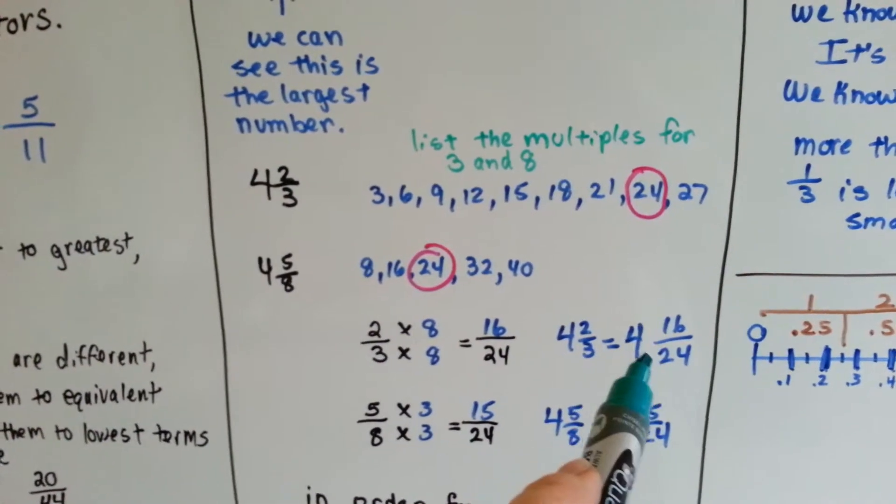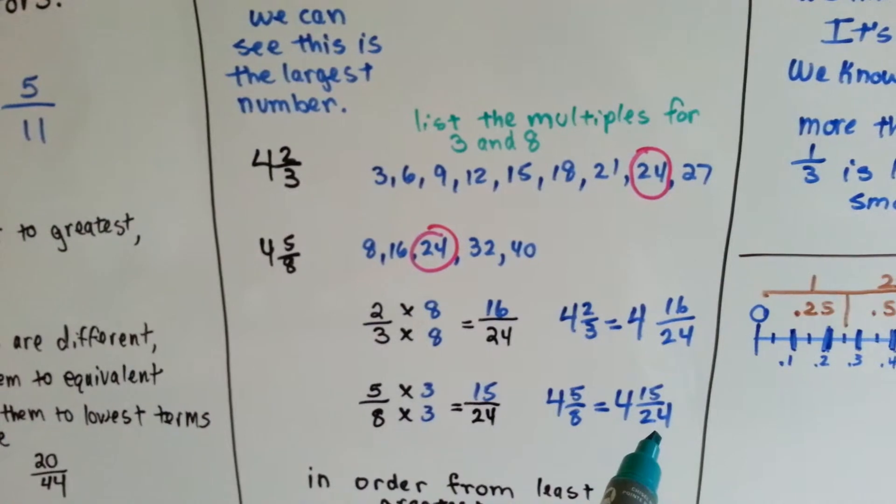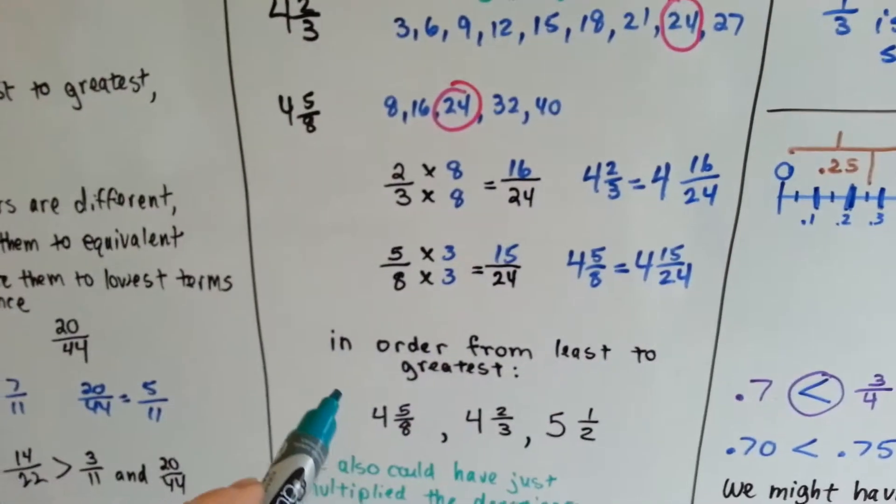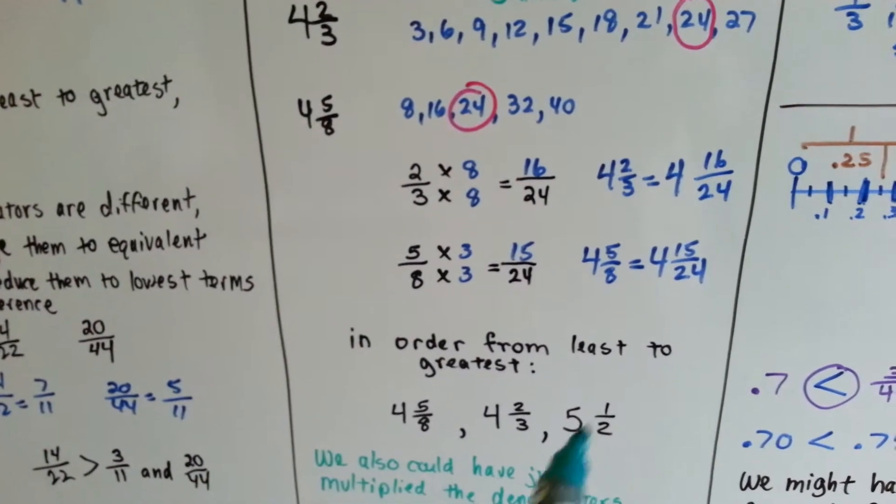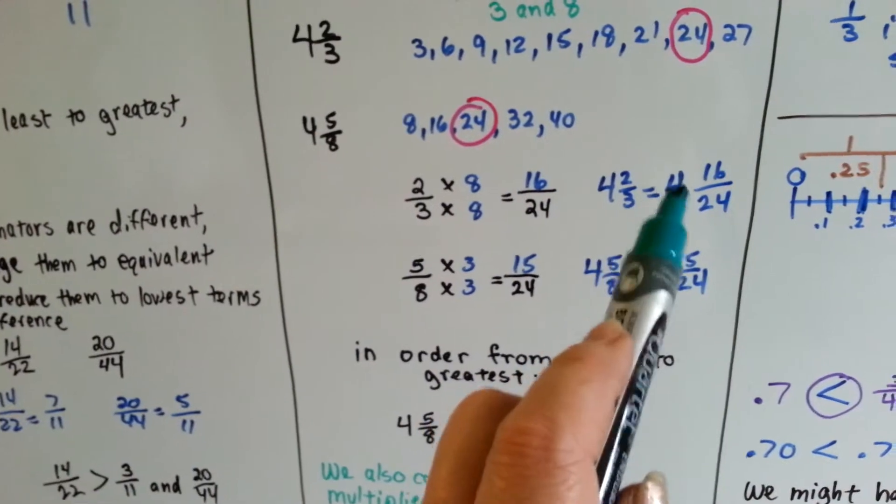We have 4 and 2 thirds becomes 4 and 16 twenty-fourths, and 4 and 5 eighths becomes 4 and 15 twenty-fourths. Now we can easily see which one's bigger. So in order from least to greatest, we know the 5 and a half is at the end. 4 and 5 eighths is smaller than 4 and two-thirds. Because that's 16 twenty-fourths instead of 15 twenty-fourths.